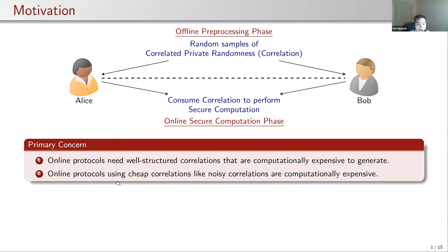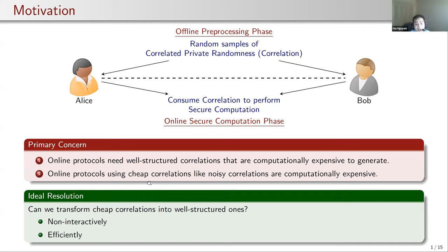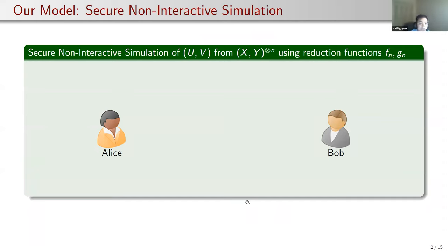The online phase consumes correlations generated from the offline phase to perform derived secure computation tasks. However, we would like to use well-structured correlations, and generating well-structured correlations is very expensive. So if the online protocol uses cheap correlations like noisy correlations, the online protocol is usually not fast enough. One solution is to transform cheap correlations into well-structured ones non-interactively and efficiently. Motivated by this, we introduce a new model called secure non-interactive simulation.